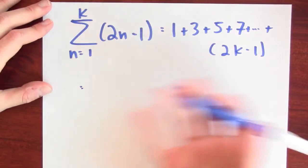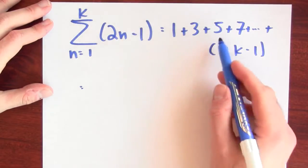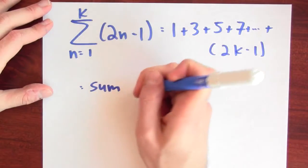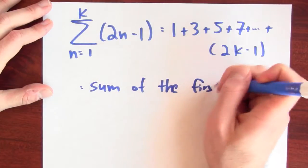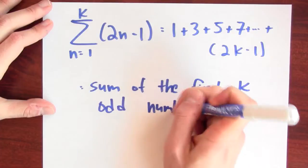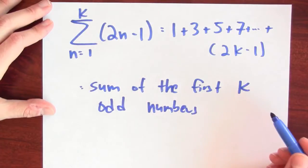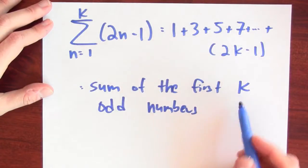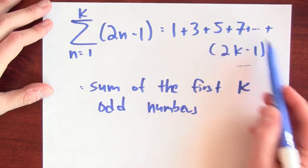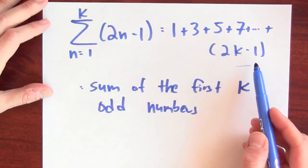In words, what is this asking me to do? Well, 1, 3, 5, this is adding up odd numbers, right? So I could say in words that this is the sum of the first k odd numbers. I'm going to add up the first k odd numbers, 1 plus 3 plus 5 until I get to the kth odd number, which is 2k minus 1.